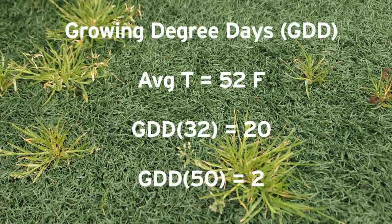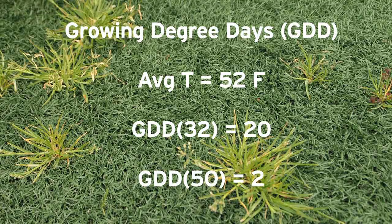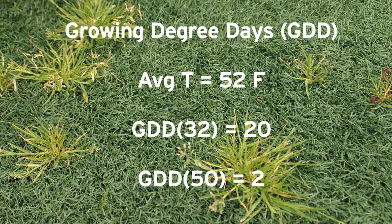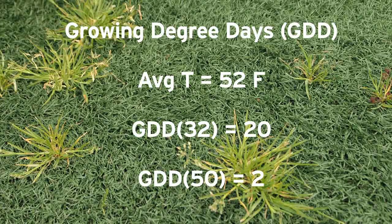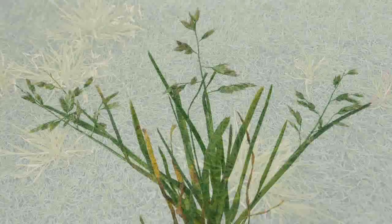For example, if the average temperature for a day was 52 degrees Fahrenheit, using base 32 the day would have accumulated 52 minus 32, or 20 degree days. Using base 50, two degree days would have been accumulated. When average temperatures are less than the base temperature, no degree days are accumulated.